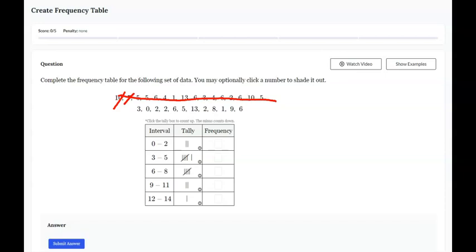And now I'm on the next row. So I'm going to type in 3, 0, 2, 2. So I've got 3, 0, 2, 2, 6, 5, 13, 2, 8, 1, 9, and 6. So now I can count these up. So this is a group of 5 plus 2 more. That makes 7. So down here is 5 plus 3 is 8. 5 plus 3 is 8. This one has 3 tally marks and this one has 2. And that's how you create a frequency table.